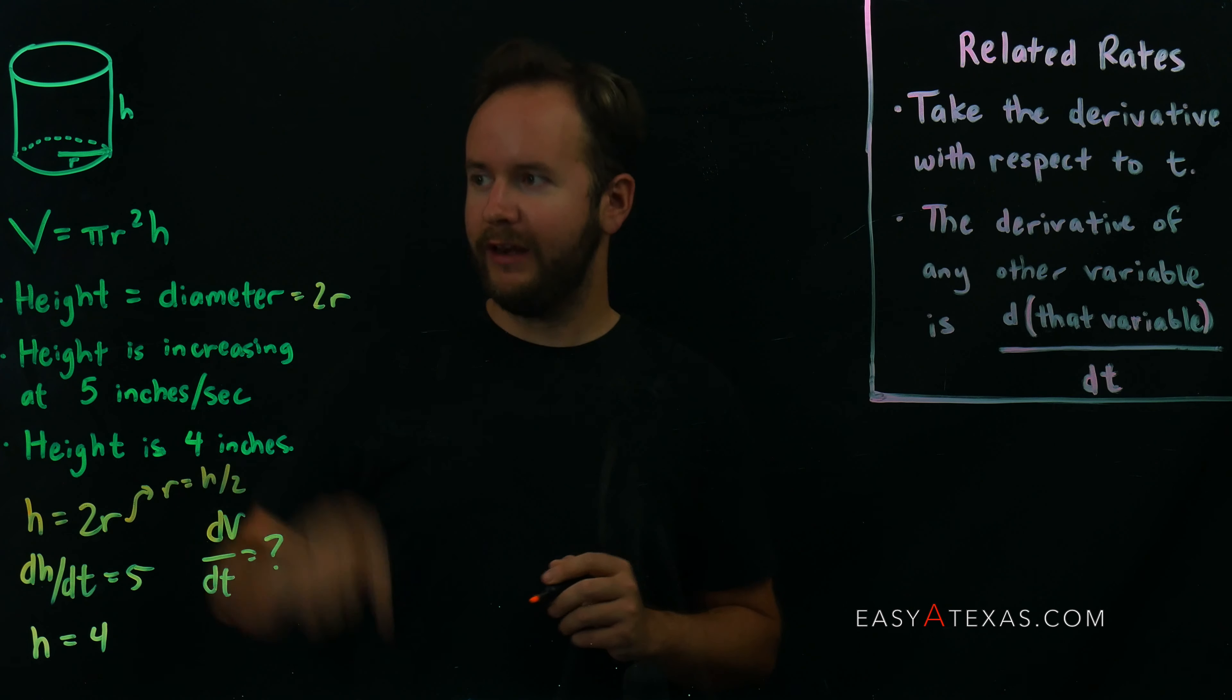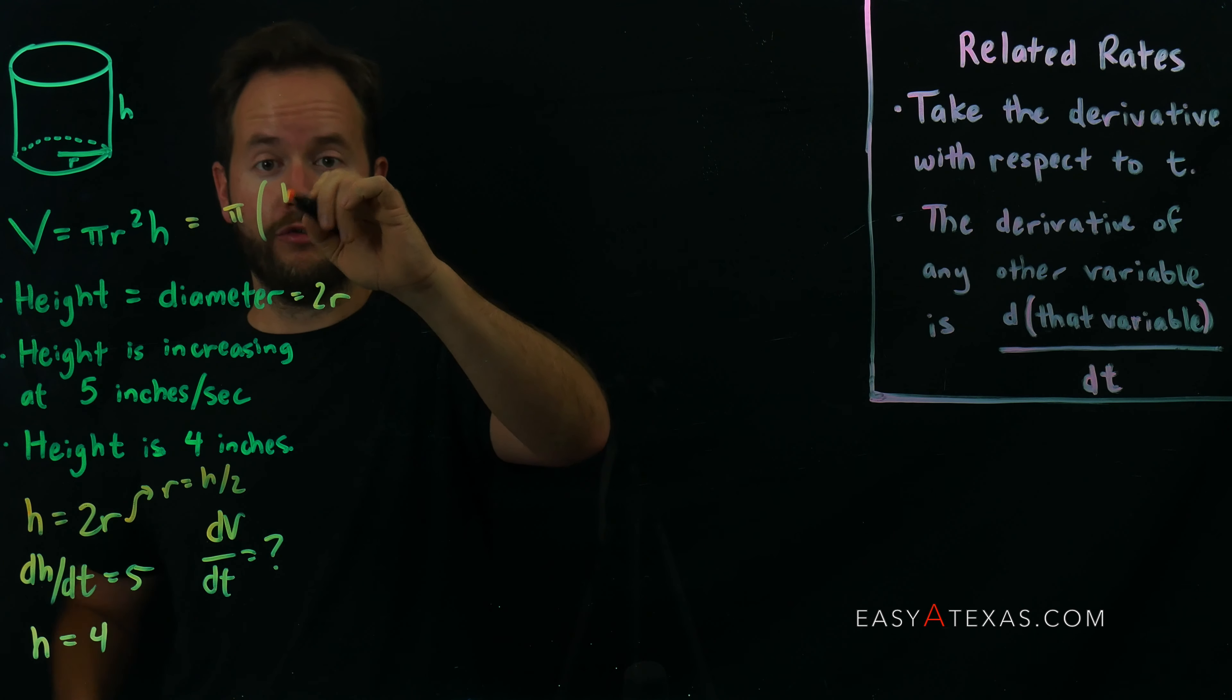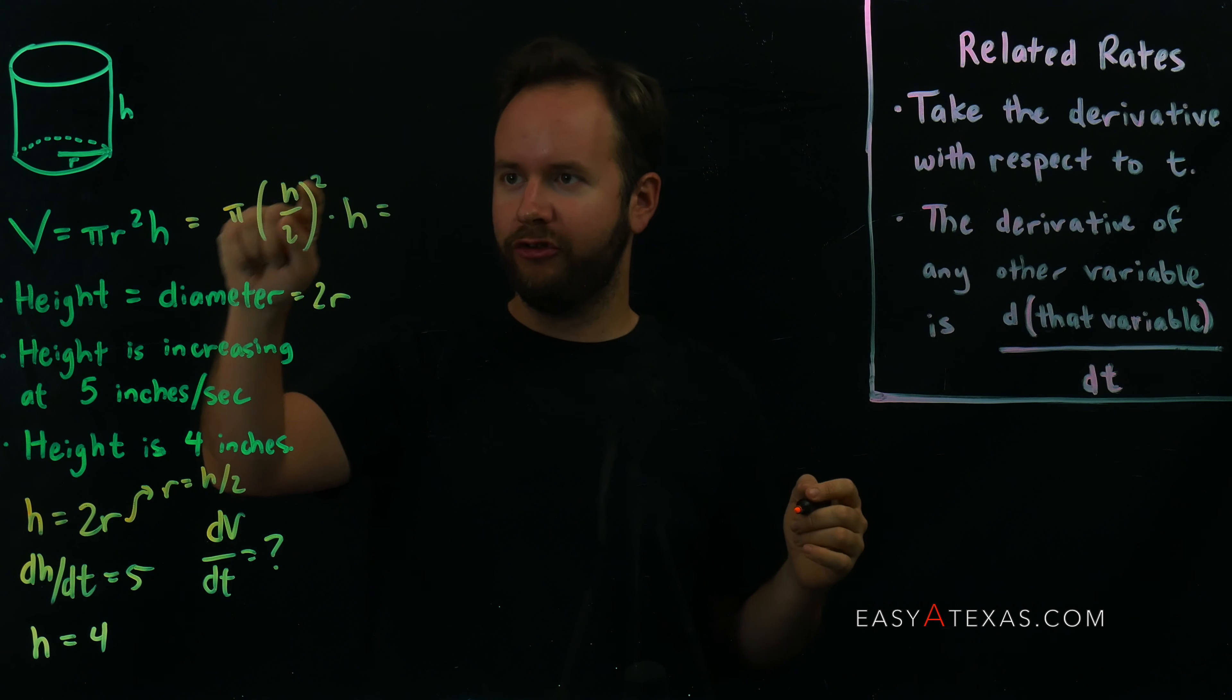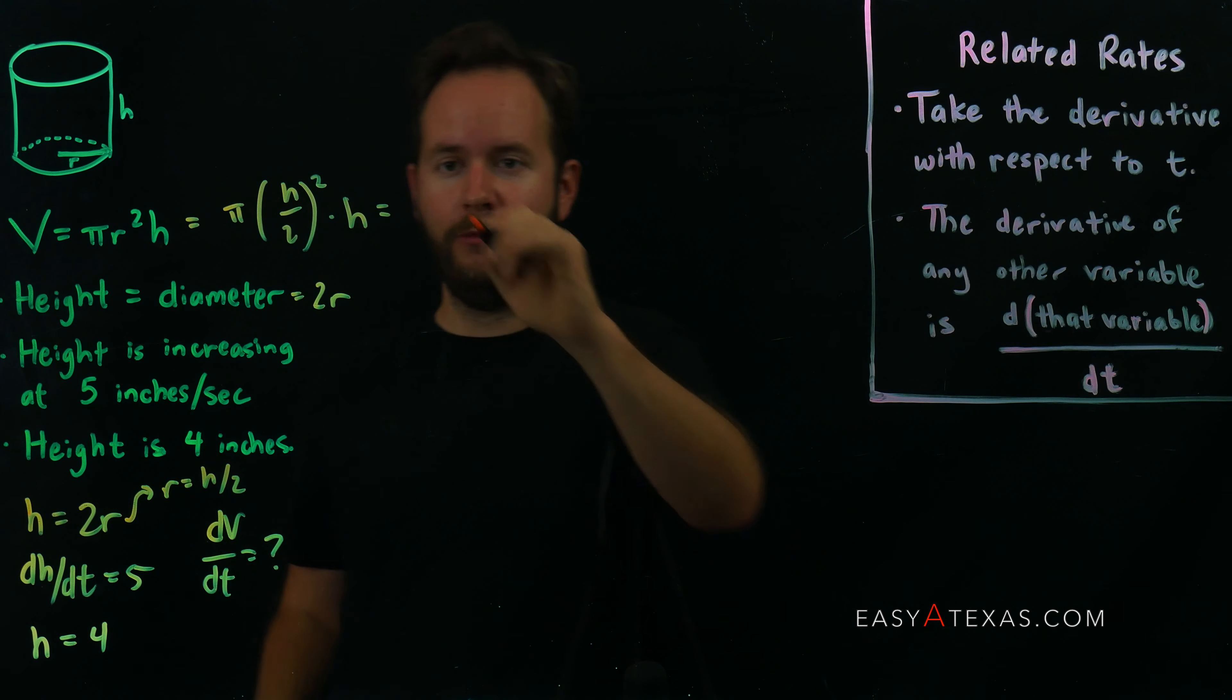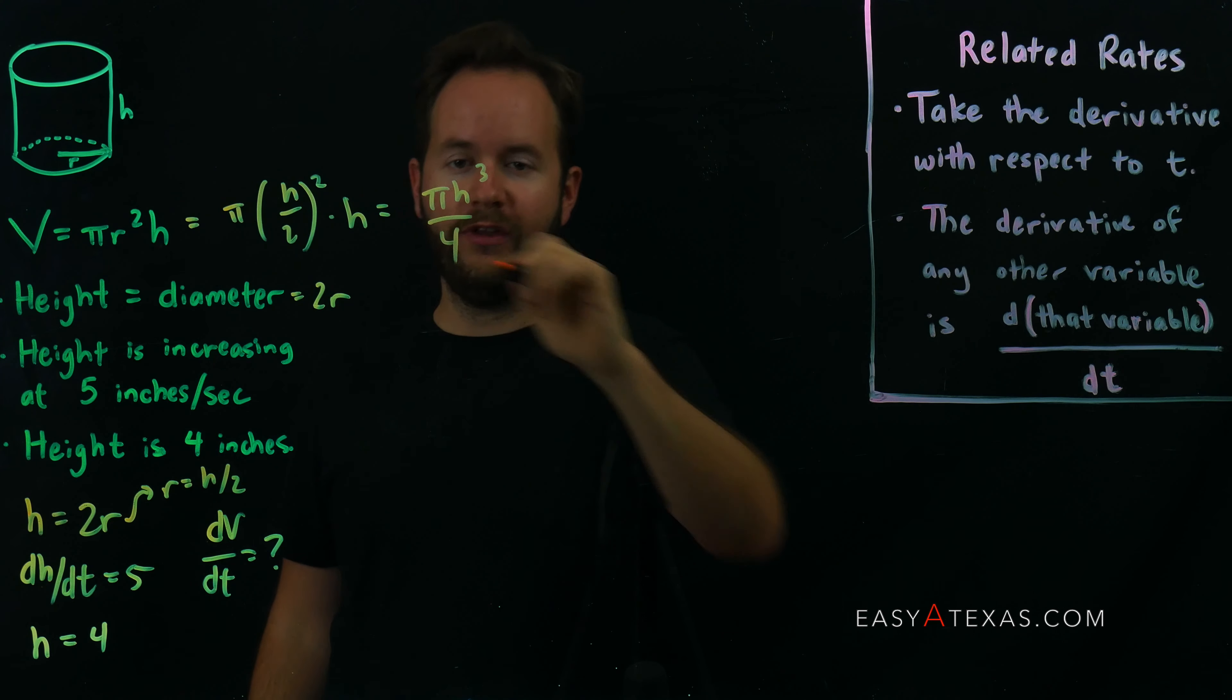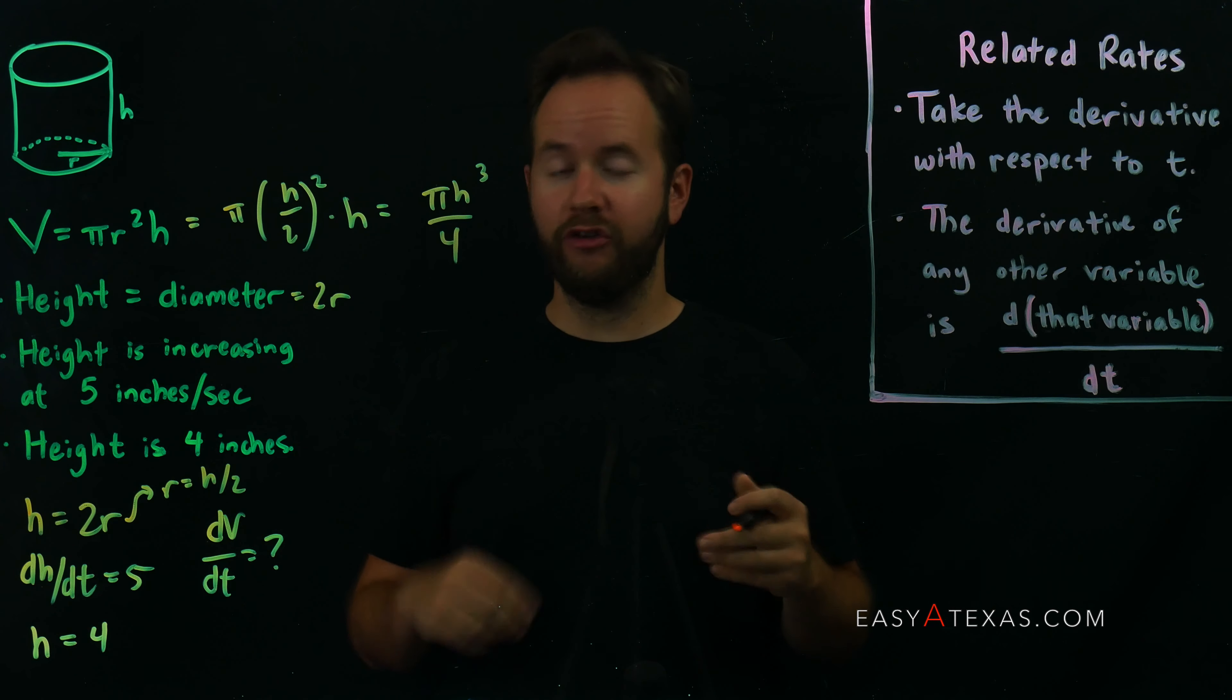So we have pi times r gets replaced by h over 2. We're squaring that and multiplying it by h. Let's clean this up a bit. h squared times h would be h cubed. We have pi h cubed, and 2 squared is 4. So this is the volume function: pi h cubed over 4. And this is all in terms of h, which is great because after all, we're given all this information about h.